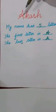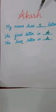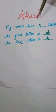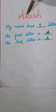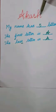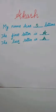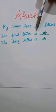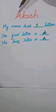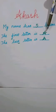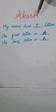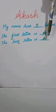For example, look at this name: Akash. My name has ___ letters. So here you have to count the letters in the name — 1, 2, 3, 4, 5. So here you have to write 5. Next, the first letter is A, so I have written A here. Next, the last letter is H, so I have written H here.